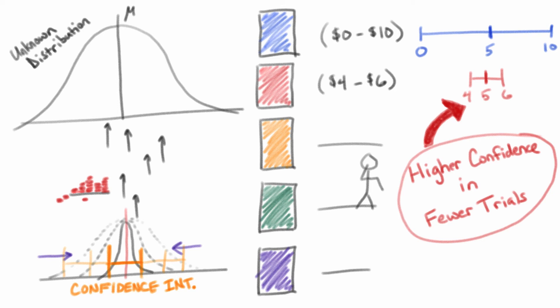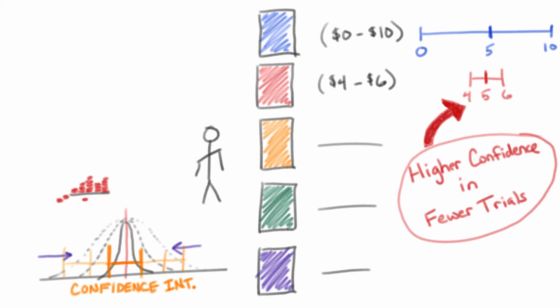Remember that every time we pull a lever to explore, we are losing the opportunity to use that same token to exploit. So we should look to minimize exploration, especially when it is not actually giving us useful information.